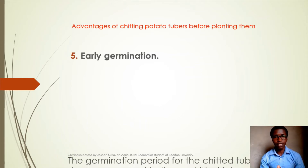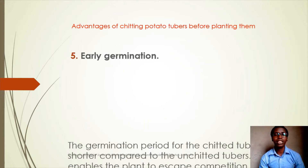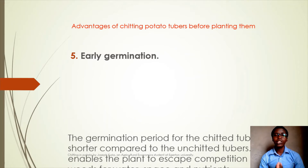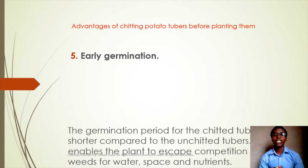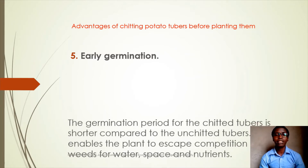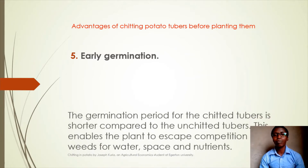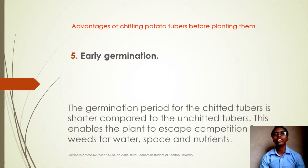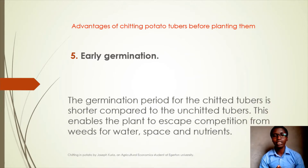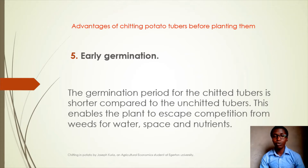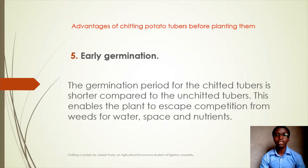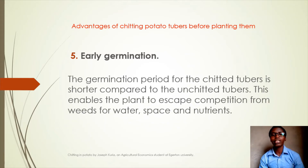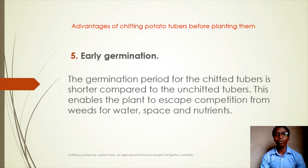Another advantage is early germination. The germination period for chitted tubers is shorter compared to untreated tubers. This enables the plant to escape competition from weeds for water, space, and even nutrients.